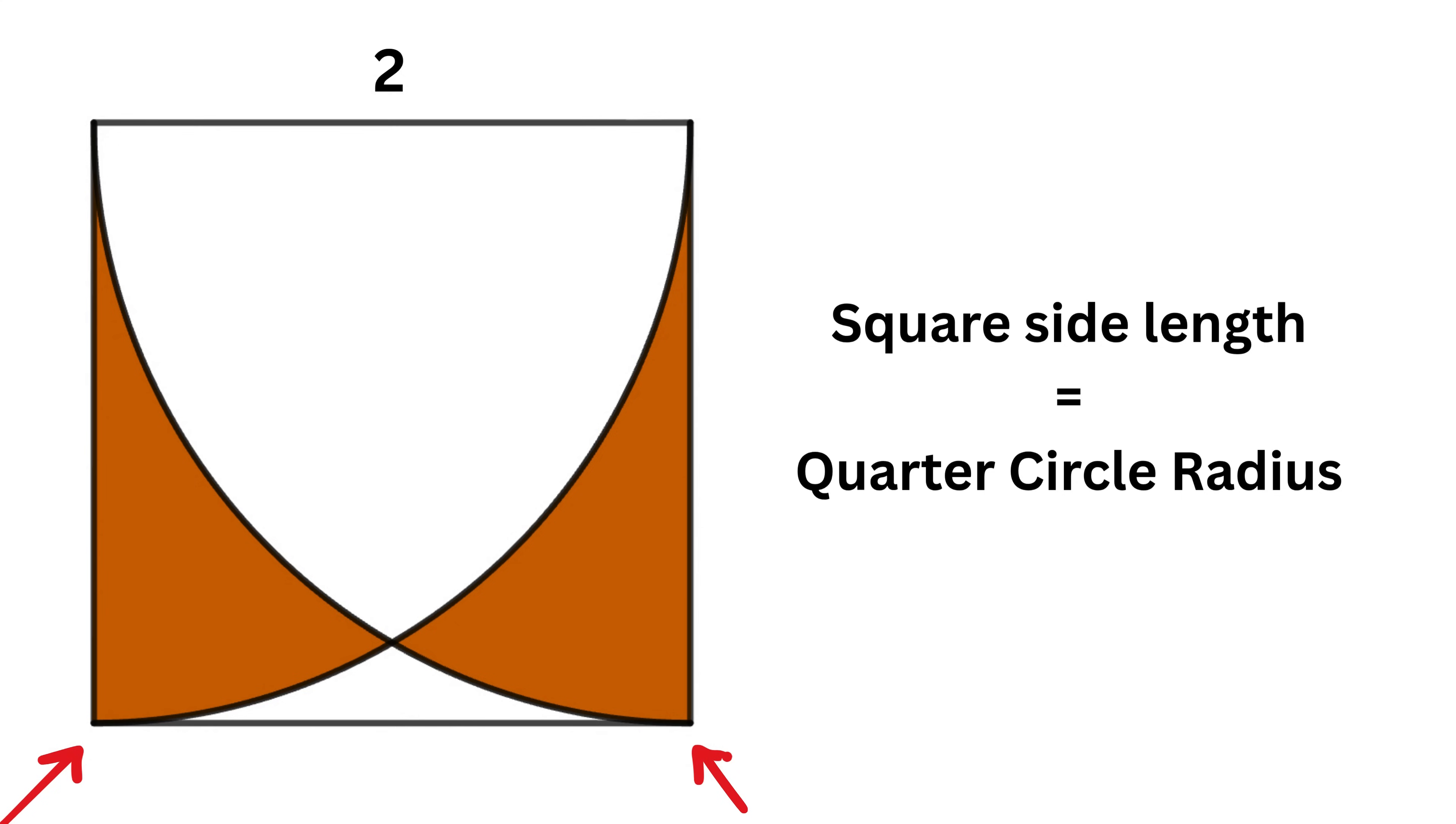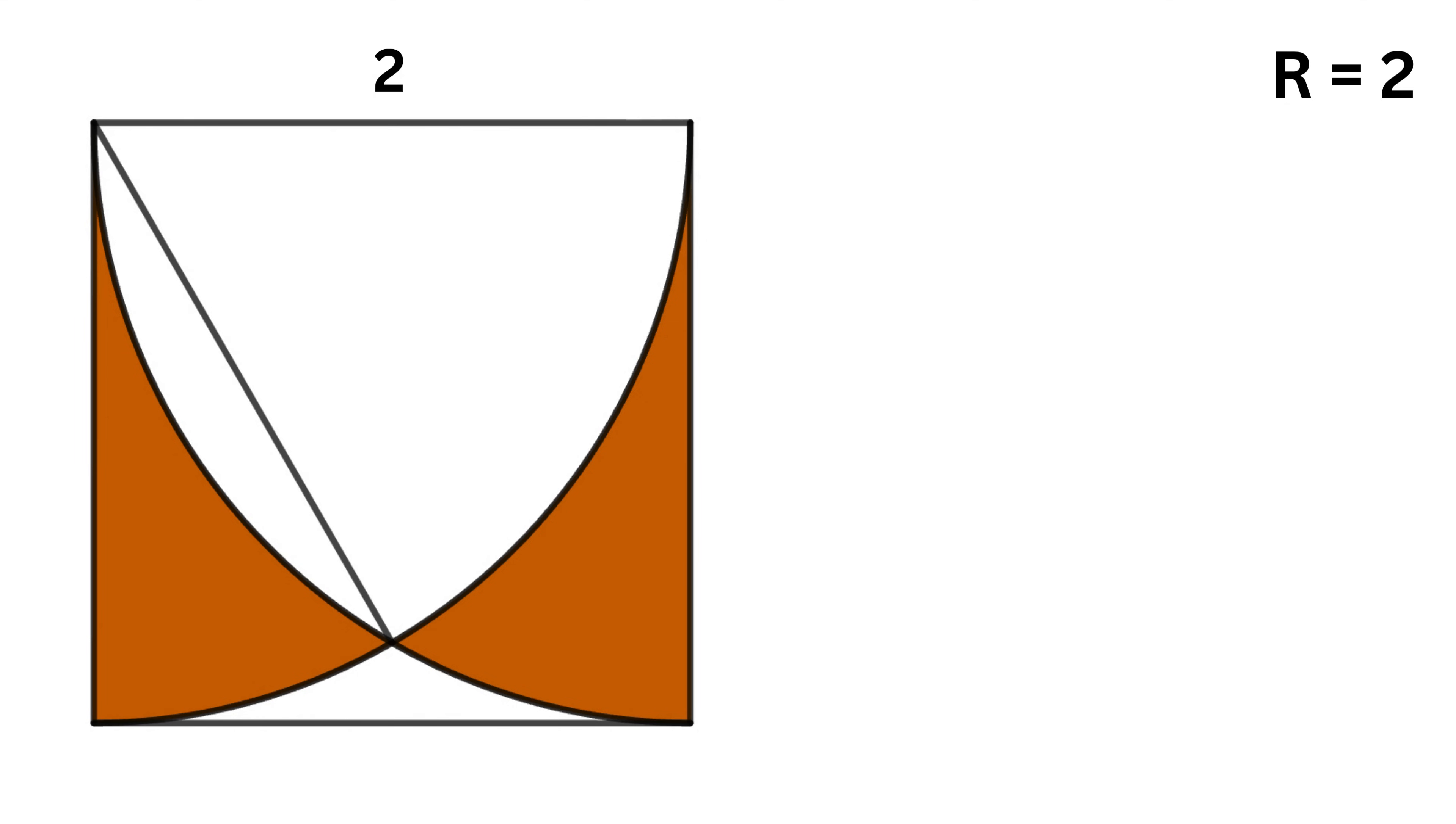Now imagine drawing a line from the top left corner, or the center of one circle, to the point where the two curves intersect, and another line from the top right corner, or the center of the other quarter circle, to the same intersection point.